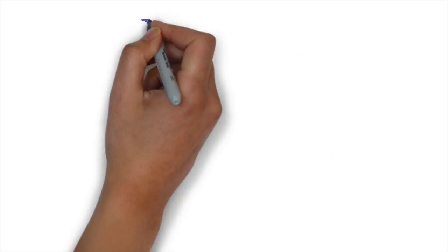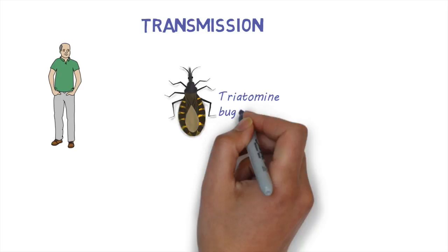Let's have a look at how this disease is transmitted. People can get infected in different ways. The most common way is through several species of blood-sucking insects called triatomine bugs.